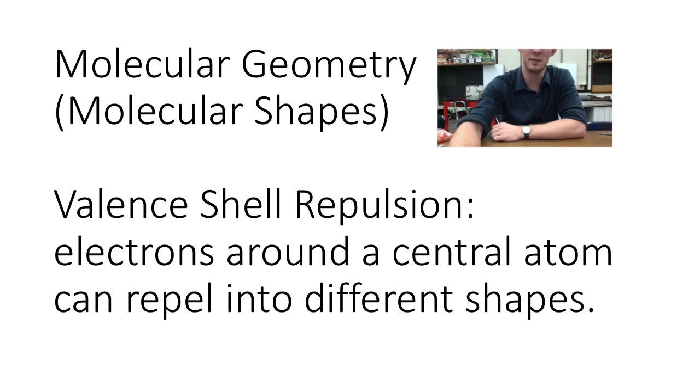Hi chem team. Because the electrons that surround central atoms are all negative, they repel each other and molecules can form different shapes.